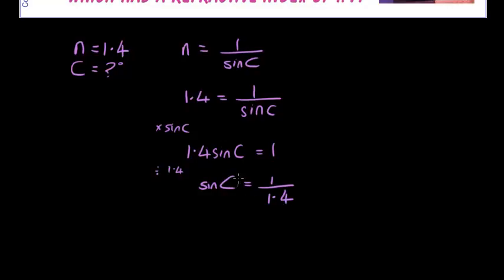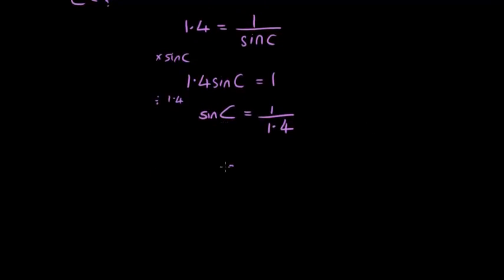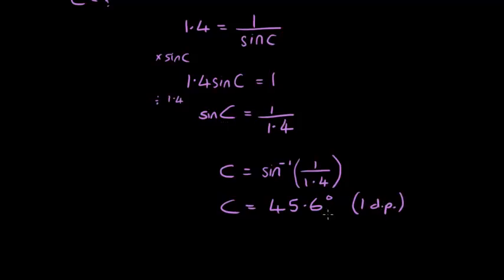Now we've got to get this angle out of the trigonometry function sine and we can do that by using the inverse of sine. So we can write C is the inverse sine of 1 over 1.4 and pop that into a calculator. And we get inverse sine 1 over 1.4 gives us 45.6 degrees and we'll do that, that's just a one decimal place, rounded to one decimal place of accuracy.